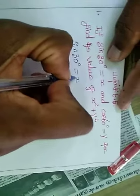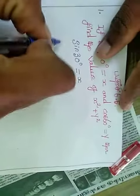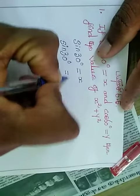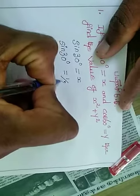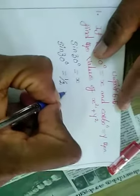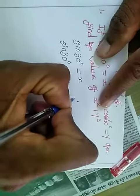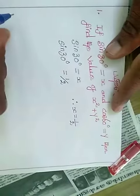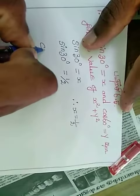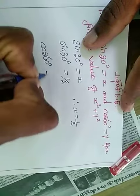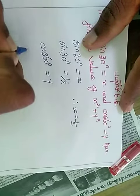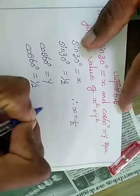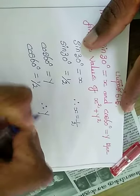Now we solve: sin 30 degree is equal to 1 by 2, therefore x is equal to 1 by 2. Then cos 60 degree is equal to y, and cos 60 degree is equal to 1 by 2, therefore y is equal to 1 by 2.